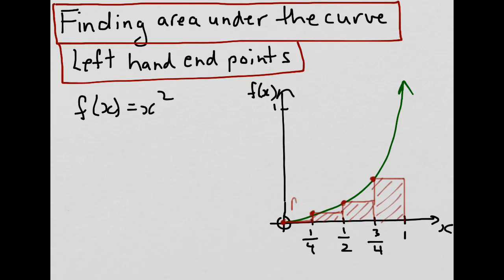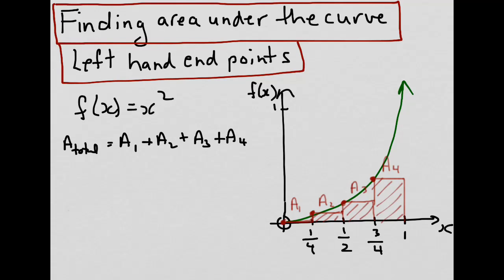We'll call the first rectangle area A1, second rectangle area A2, third rectangle area A3, and A4 for the fourth rectangle area. The area total would be the addition of all the areas of these rectangles. To solve this equation, we will need to know the coordinates of each of the four left-hand endpoints. For the fourth rectangle, the left-hand endpoint would be x equals 3 quarters. Substituting 3 quarters into our function, we would end up with 9 sixteenths.